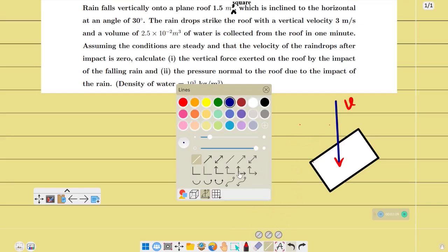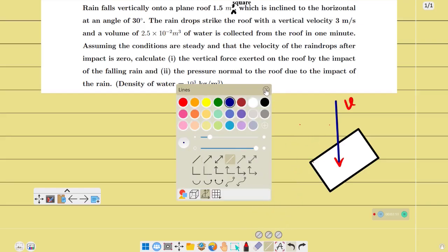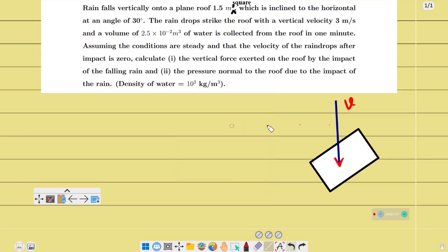This is a plain roof, horizontal at an angle of 30 degrees. So if you have a plain roof about 30 degrees, this is a plain roof at an angle of 30 degrees.